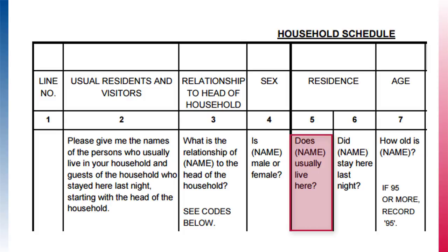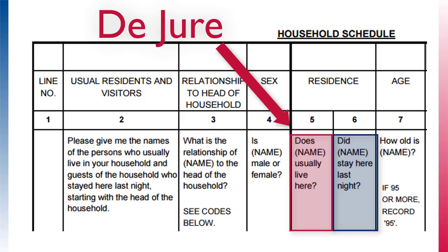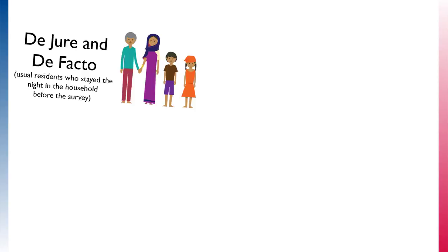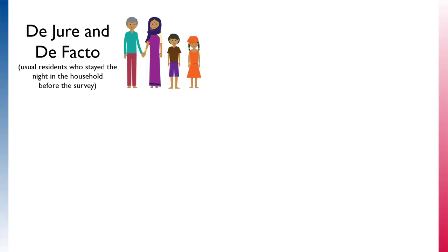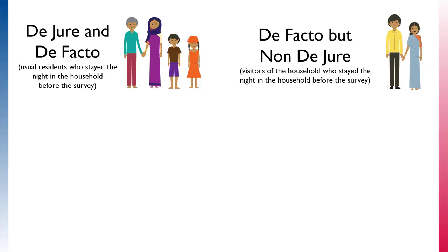If the person stayed there the previous night, they are considered de facto household members. Most people in a DHS survey are usual residents who stayed there last night — both de jure and de facto. However, there is a smaller subset of people who are visitors — de facto but non-de jure. Additionally, there may be household members who are away, such as those visiting relatives in another town; those are de jure but non-de facto.